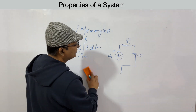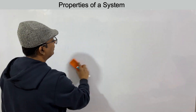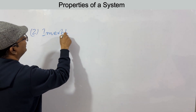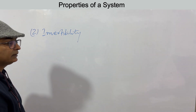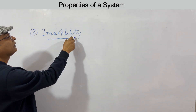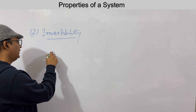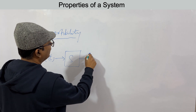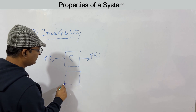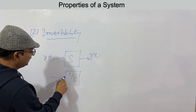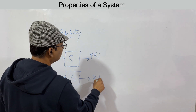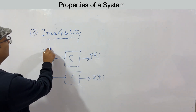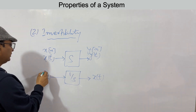The second property is invertibility. An invertible system means that if input x(t) enters system S and produces output y(t), there exists an inverse system such that when y(t) is fed into it, we can retrieve the original signal x(t).